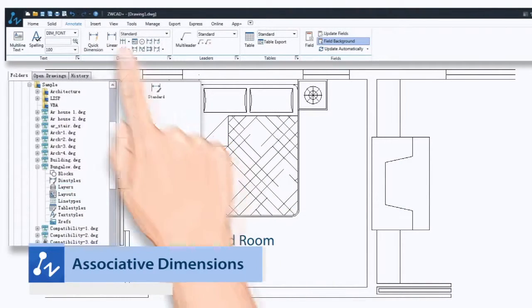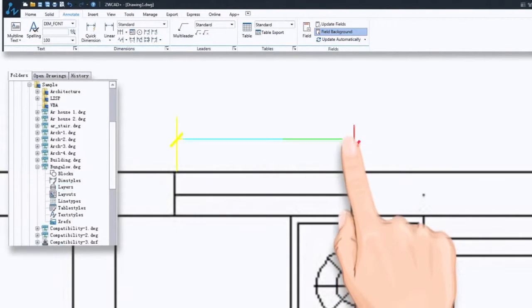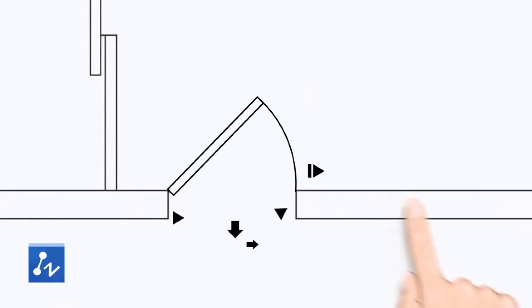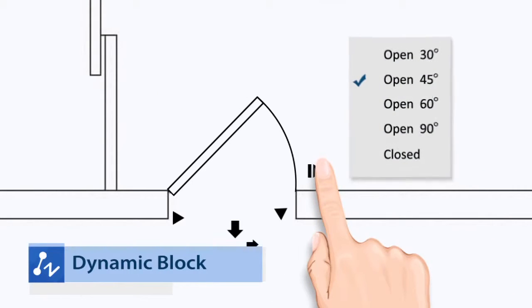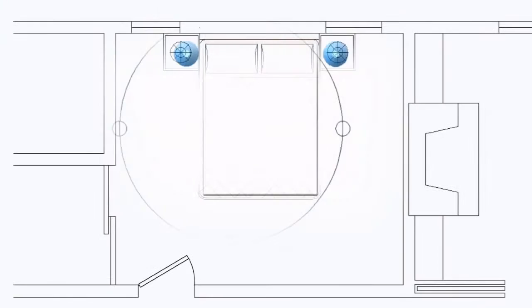Associative Dimension allows him to alter his drawings without the need to also change measurement annotations. Dynamic Block lets Brian modify blocks quickly. Selecting a parameter to change the object eliminates the need to draft again.